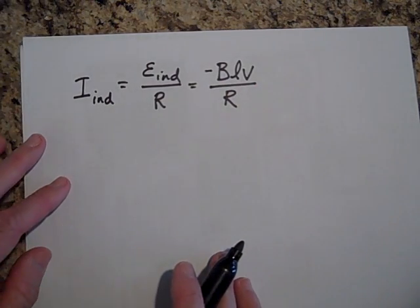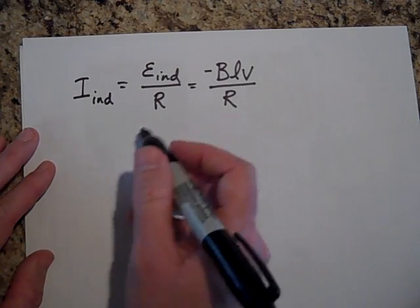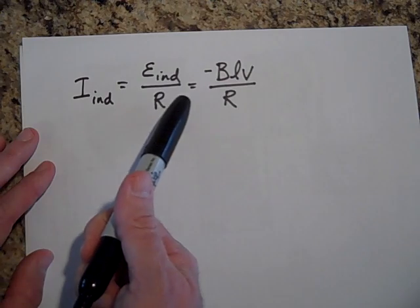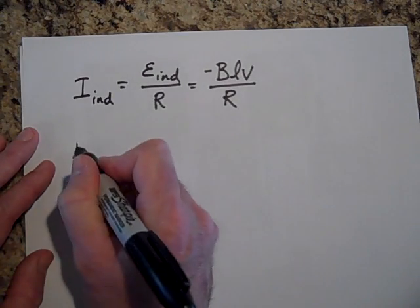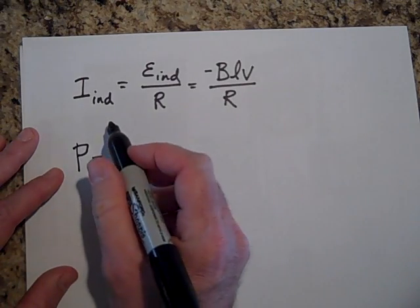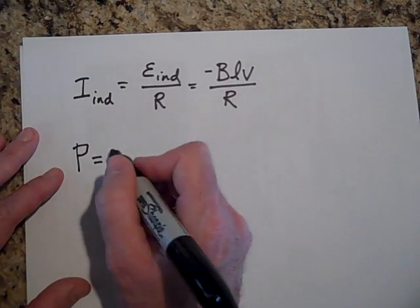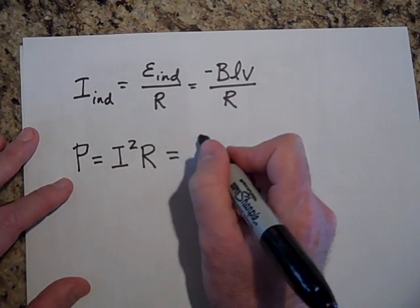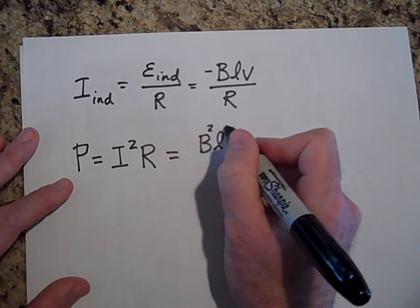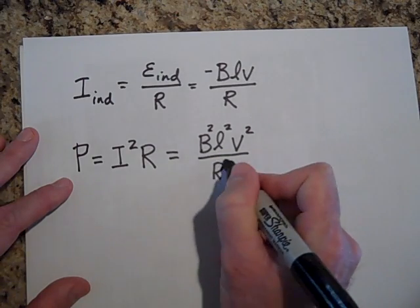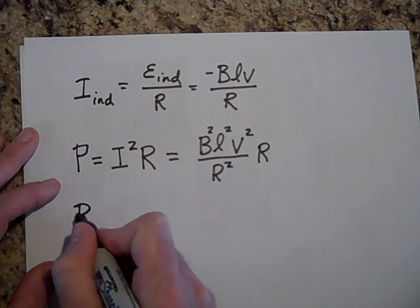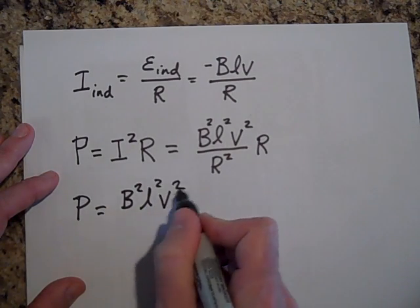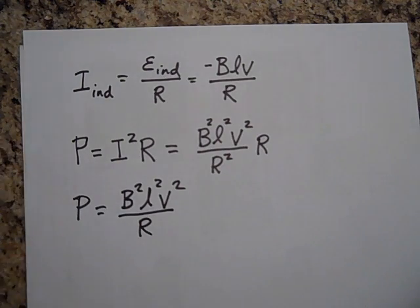How much power is being used? The rate at which mechanical energy gets converted into electrical energy is power, equal to I²R. Substituting I equals B·L·V over R, that's (B·L·V)² over R², times R, which simplifies to B²·L²·V² over R. That's the power dissipated — something you can derive directly.